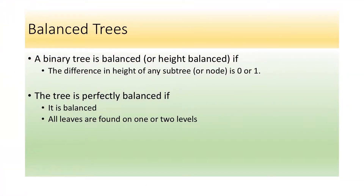What is a balanced tree? A balanced tree, essentially, you can look at a tree and say it's balanced — the left and the right are relatively equal, about the same depth, and the leaves are about the same level. When we say balanced tree, we actually have a specific definition: the difference in height of any subtree is between 0 and 1. It's perfectly balanced if all the leaves, those bottom-level nodes, are on one level or another, never more than one level different from each other.